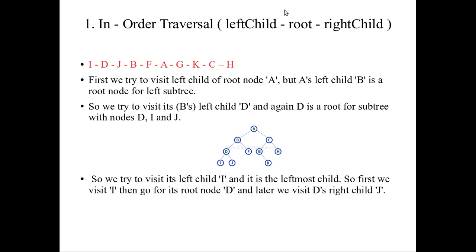In in-order traversal, you first visit the left child, then the root node, then the right child. So the order is: left, root, right. We will now apply this rule to our example tree.